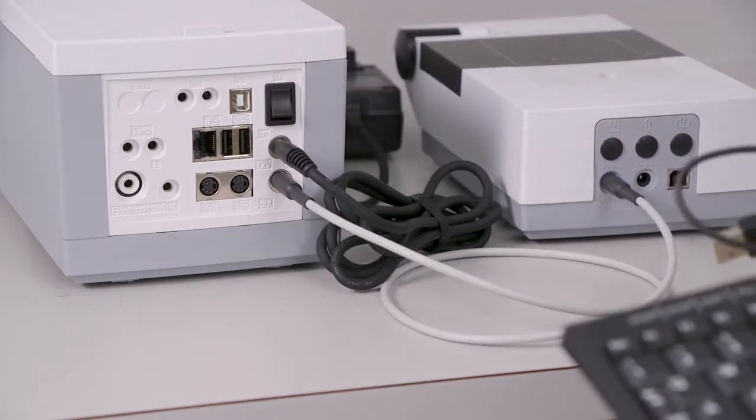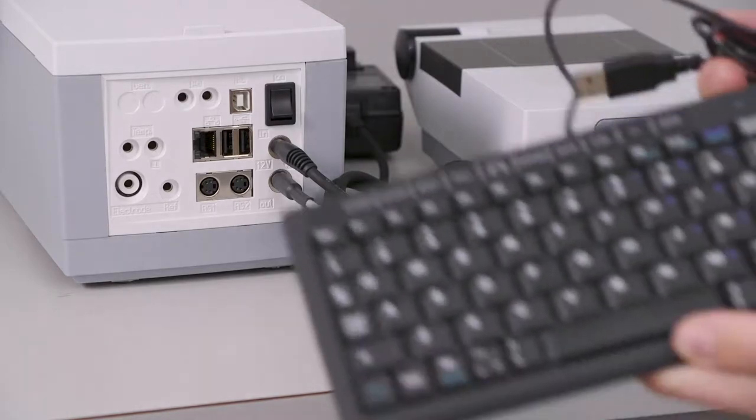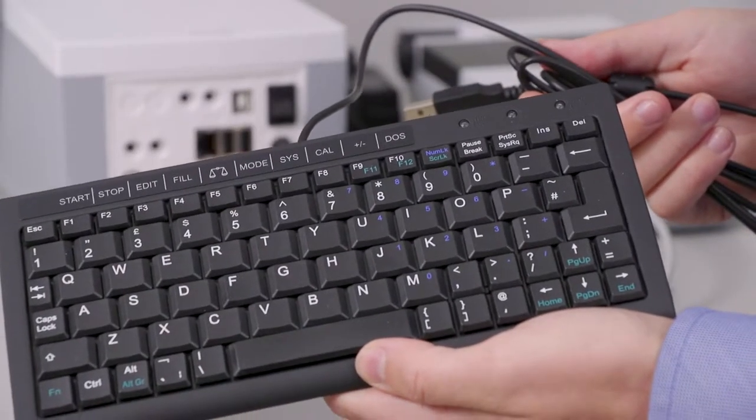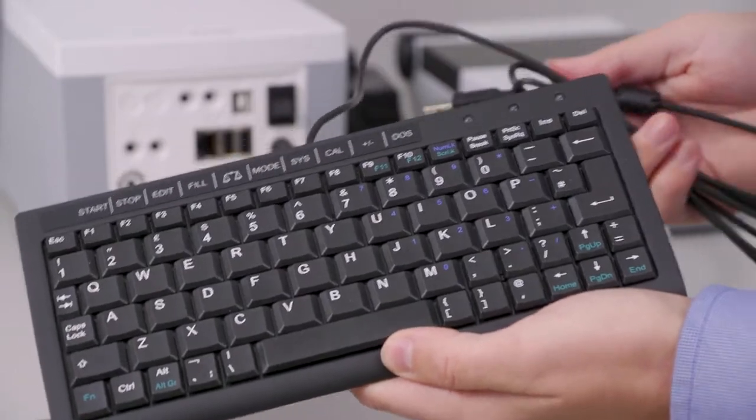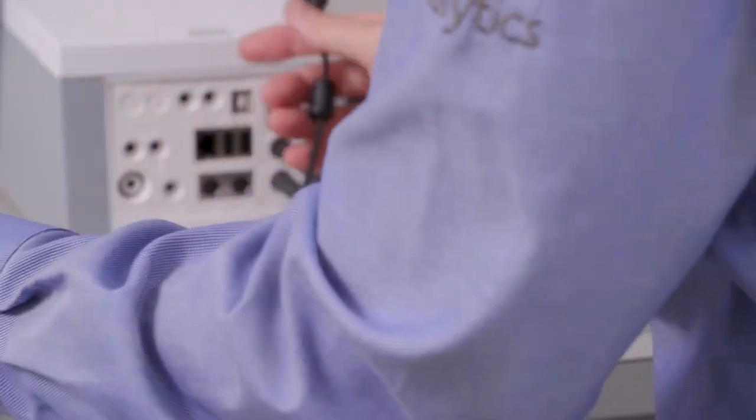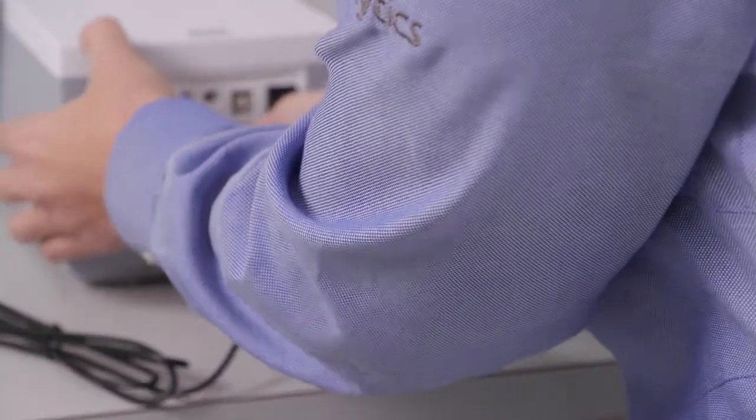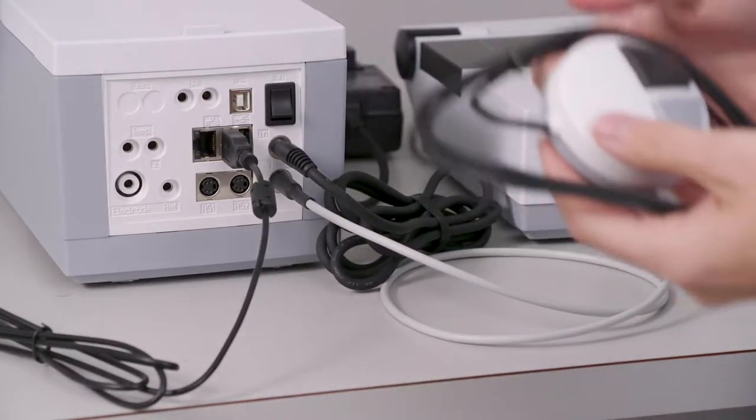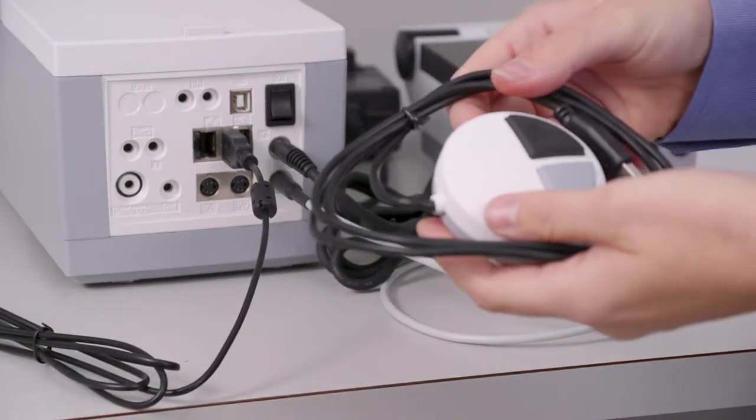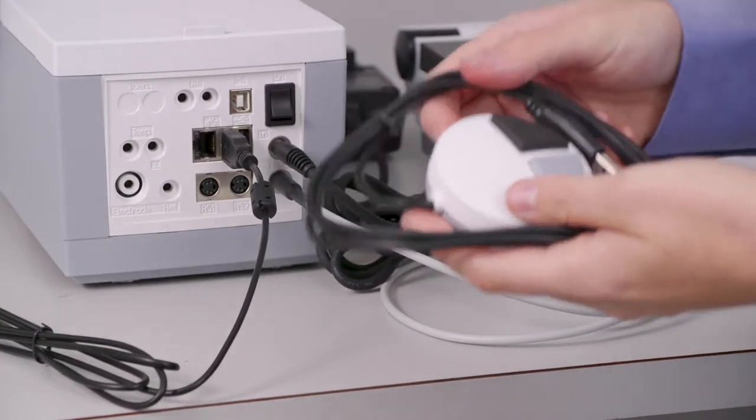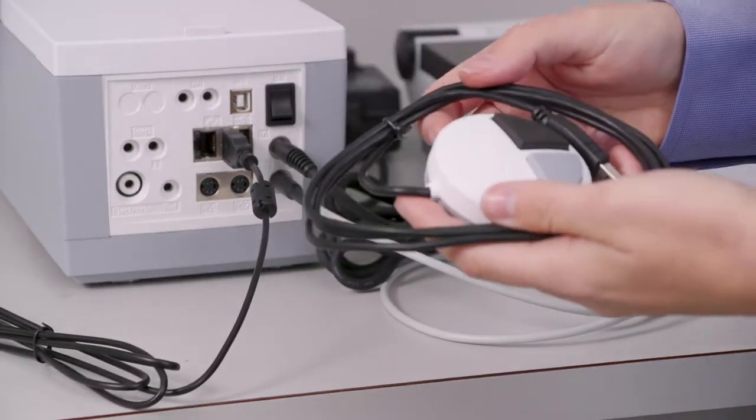Now is a good time to plug in any USB devices that you may have. One example is the mini keyboard that comes with all of our titrators. You can plug this into any of the USB ports that we have. A manual controlled mouse also comes with all of our units, but in this case we're going to skip it because we're running auto-titrations.